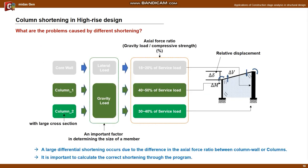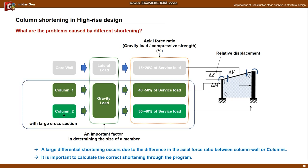The causes of differential shortening have already been explained in session 1. Additionally, differential shortening occurs between columns when the column cross-section is determined to be larger than structurally required by other factors such as architectural needs, reducing the axial force ratio. In this case, large differential shortening may occur even between columns. To obtain and reflect the correct additional member forces in the design, it is important to calculate the correct shortening through the program.